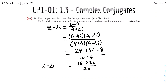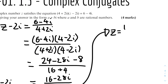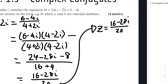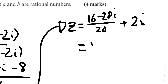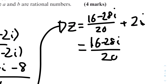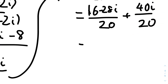Now we add 2i to both sides to solve for z. So z = (16 - 28i) / 20 + 2i. Converting 2i to the same denominator gives 40i / 20. Therefore z = (16 - 28i + 40i) / 20 = (16 + 12i) / 20.